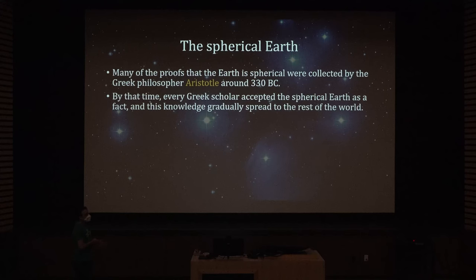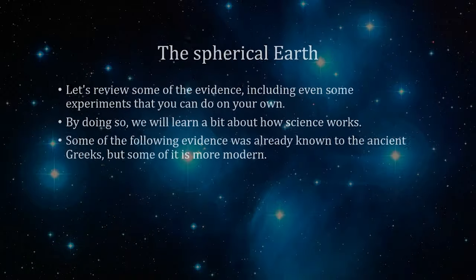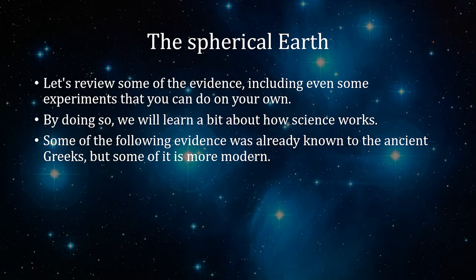Many proofs that the Earth is spherical were collected by the Greek philosopher Aristotle around 330 BC. By that time, every Greek scholar accepted the spherical Earth as fact, and this knowledge gradually spread to the rest of the world. Let's review some of the evidence — including experiments you can do on your own — and by doing this, we'll learn a bit about how science works.